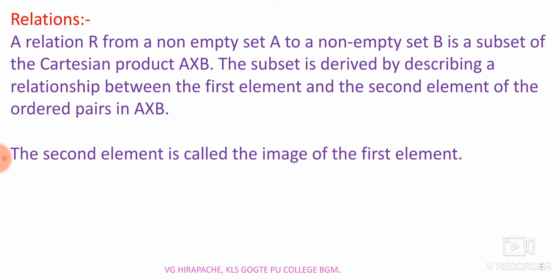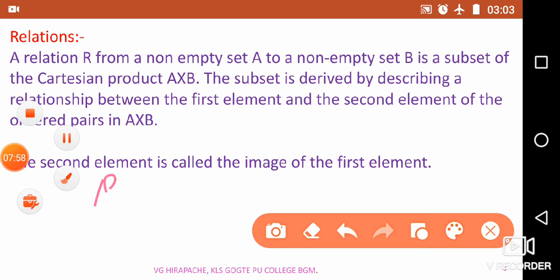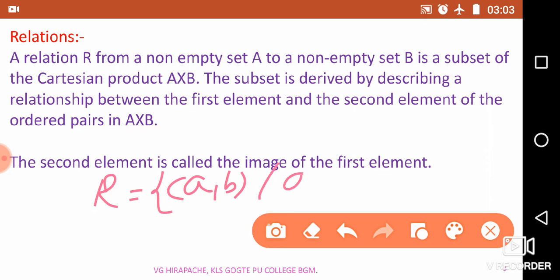As I mentioned, the second element is the image of the first element. In the relation R, suppose we have the ordered pair (a, b) such that a is greater than b. Then the second element of each ordered pair is called the image of the first element. Therefore, b is the image of a, and a is called the pre-image of b. A is an element from the domain and b is an element from the co-domain.